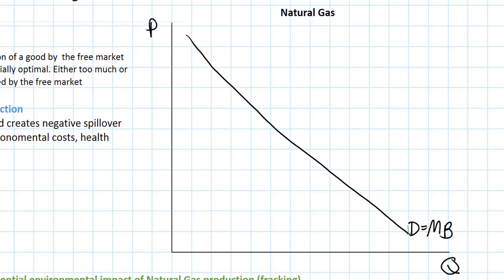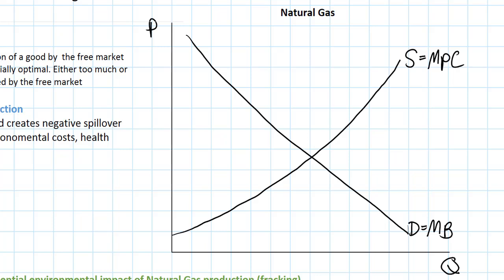We also know that the production of natural gas is represented by the supply curve, which slopes upward because of the increasing marginal cost of gas production. The supply curve here represents the marginal cost to gas producers. I'm going to call this marginal private cost because it's the cost faced by the actual producers of gas — it does not include environmental or health costs. When we take into account the marginal private costs and the benefits of gas production, we come up with an equilibrium quantity QE at a price PE.